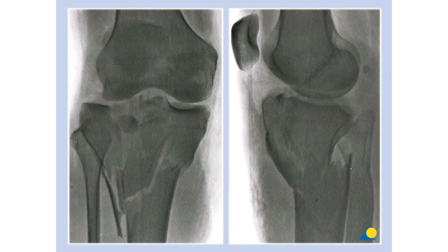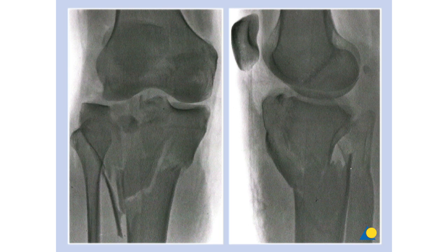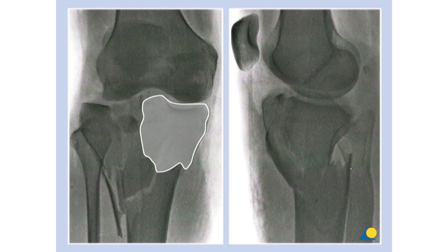Bicondylar type C fractures of the tibial plateau are multi-fragmentary articular fractures, characterized by the involvement of both the medial and lateral plateaus. As a rule, on the lateral side, there is usually considerable comminution and impaction of the articular surface. On the medial side, there is usually a large bone block that has been avulsed or sheared off in one piece.